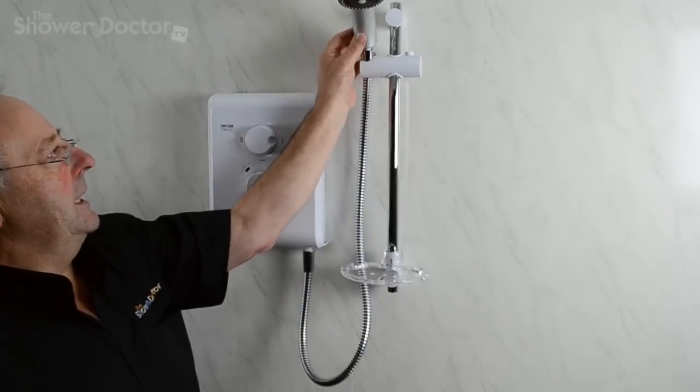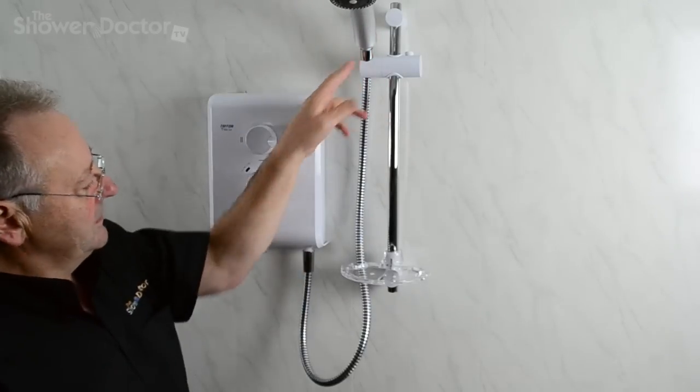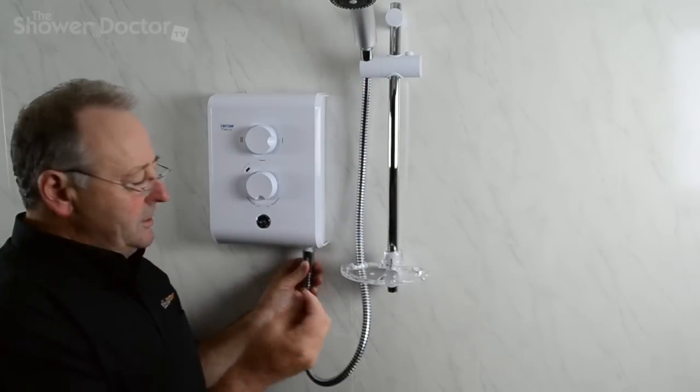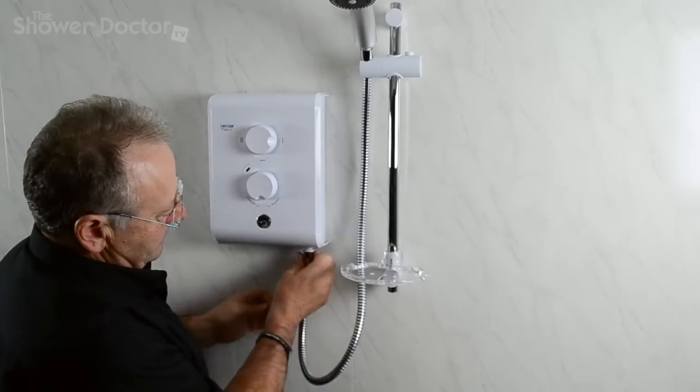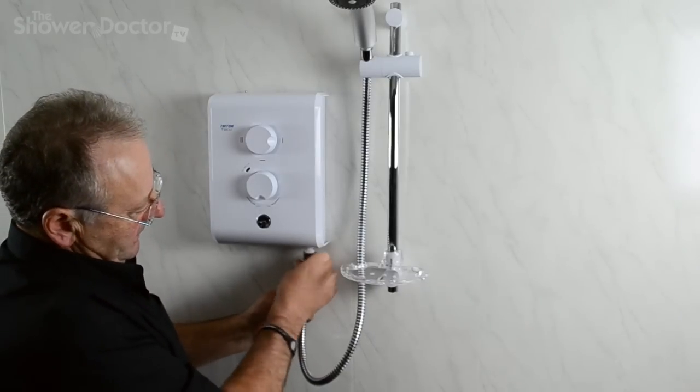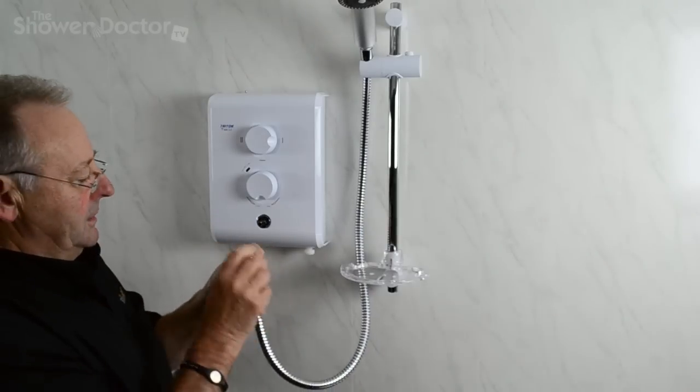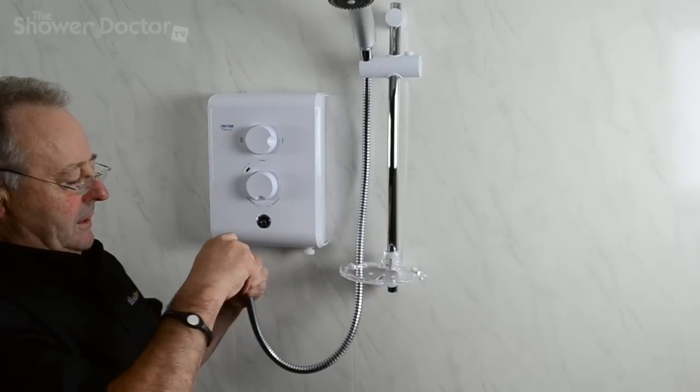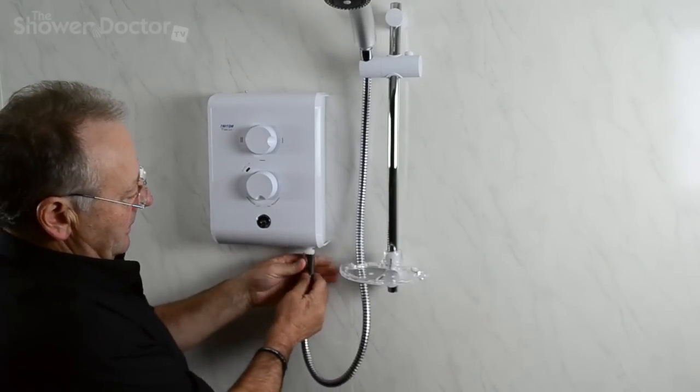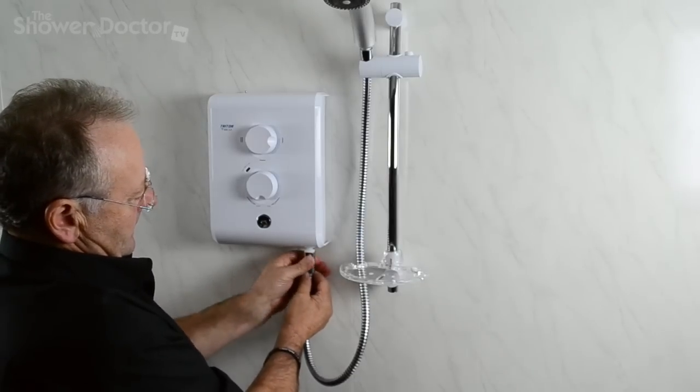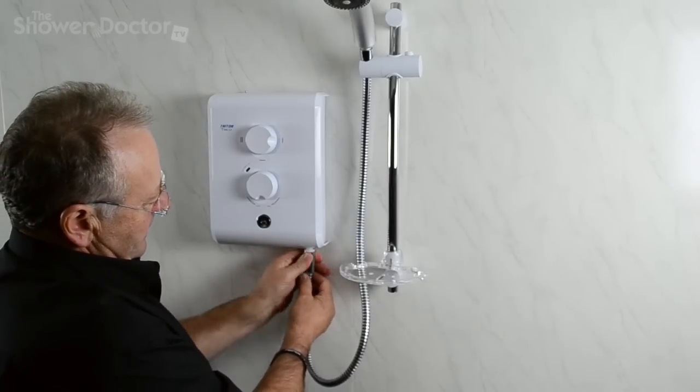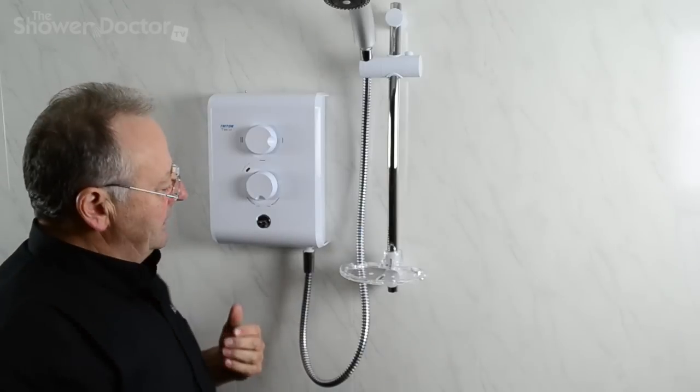Occasionally what can happen is you can have a problem with one of the ends leaking, and the way around that is just to reuse the old washer. So what we'll then do is put the other washer in here and double washer this. With the two washers in, you can be pretty certain that it will be watertight. And that's it - once this is screwed up, we can now have a shower and test it.